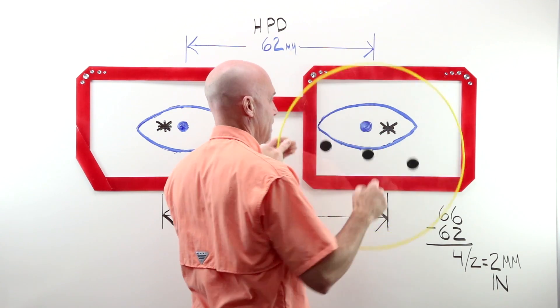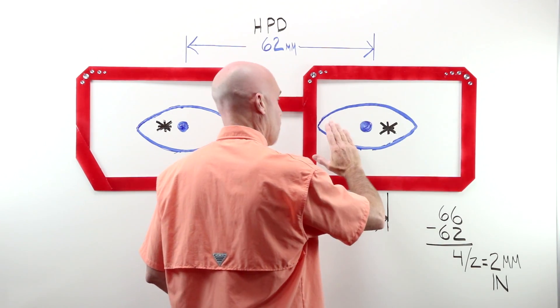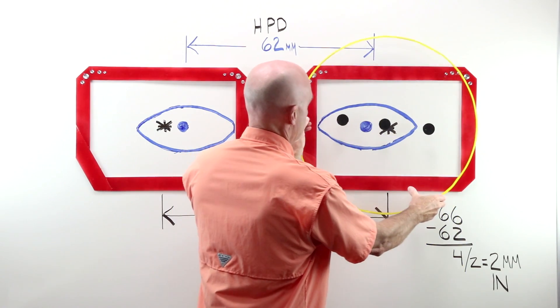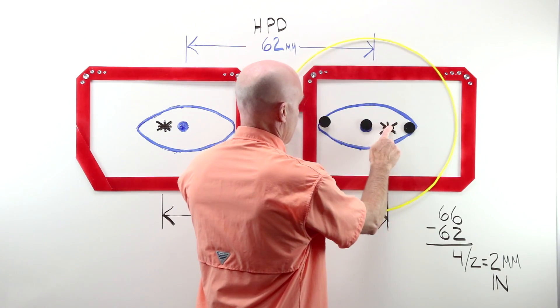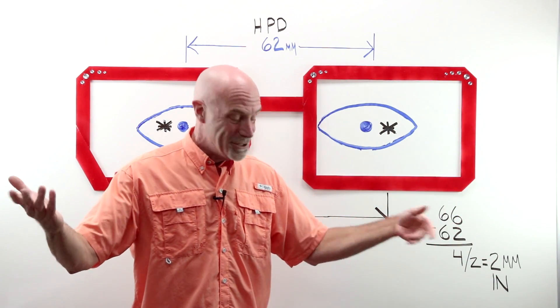Decentration is the de-centering from the center of this point, either out or in, in 99% of the time, out 1% of the time, of taking that lens OC, moving it over, and blocking it there. That is the concept of decentration. That's it.